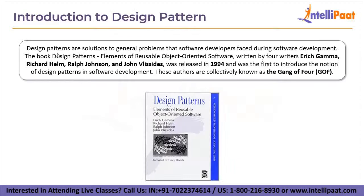Design patterns are solutions to general problems that software developers face during software development. The book 'Design Patterns: Elements of Reusable Object-Oriented Software,' written by Erich Gamma, Richard Helm, Ralph Johnson, and John Vlissides, was released in 1994 and was the first to introduce the notion of design patterns in software development. These authors are collectively known as the Gang of Four, or GoF.